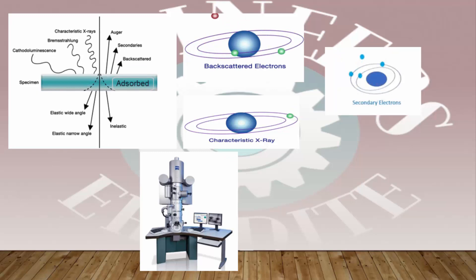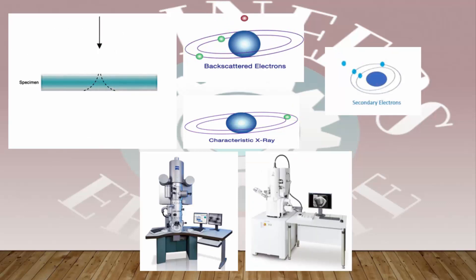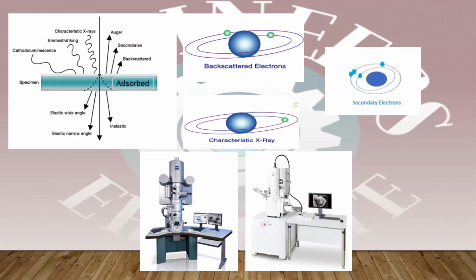Transmission electron microscopy mostly used transmitted beam of electrons, electrons elastically and inelastically scattered electron beams. On the contrary, the scanning electron microscope use backscattered electrons, secondary electrons for the imaging purpose, and the x-ray beam for the characterization or spectroscopic measurement.